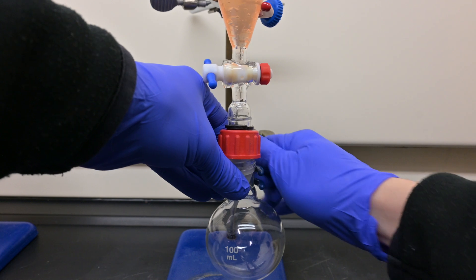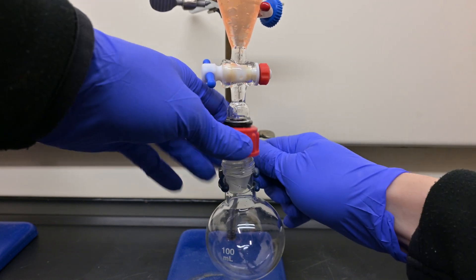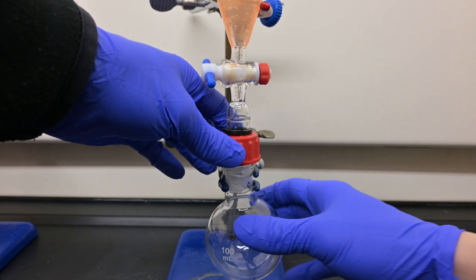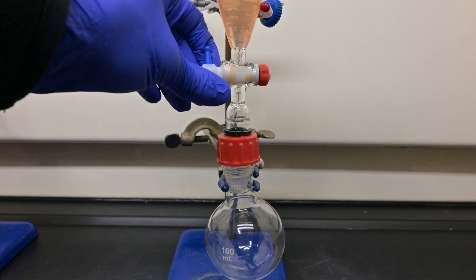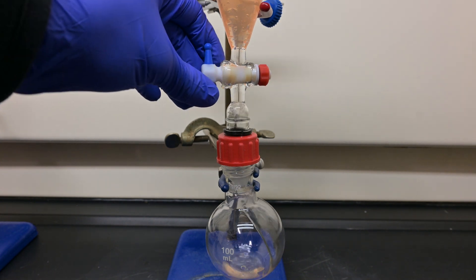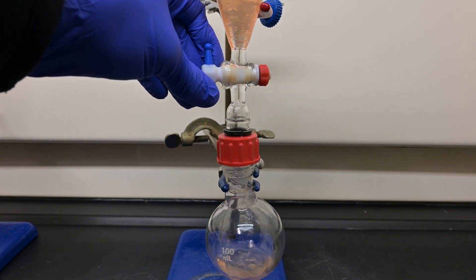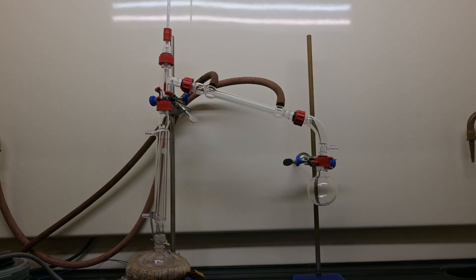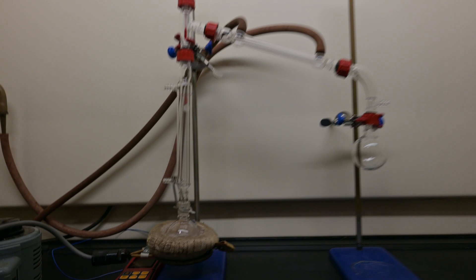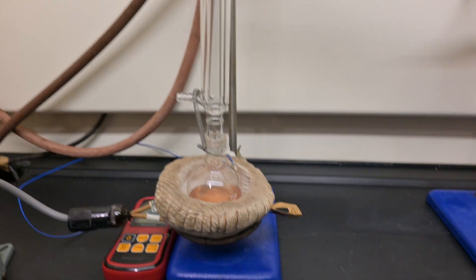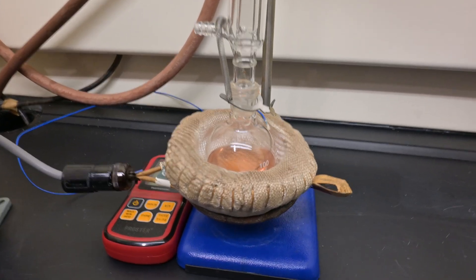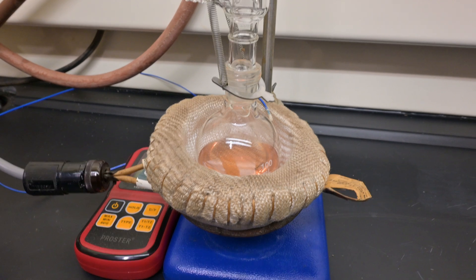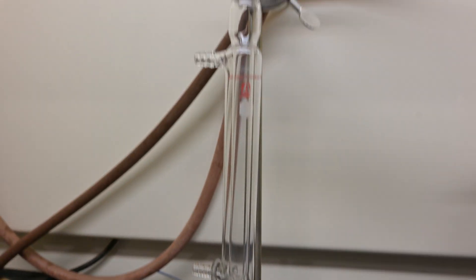Next, the crude is transferred to another flask, and another distillation setup is created. This time we will include a condenser between the distillation adapter and the crude flask. This will act as a fractional column allowing larger temperature control.